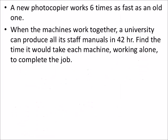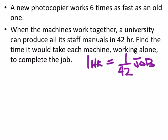Now we can look at this a little differently. For example, how much of the job can be done in one hour? Well, that would be 1/42 of the job for both of them in one hour. The new machine would complete 1/X of the job in that time, since we don't yet know how much it would complete.